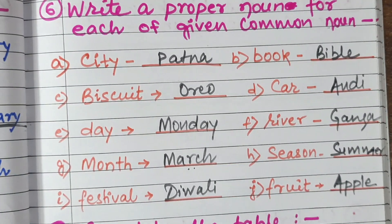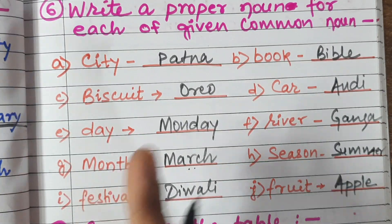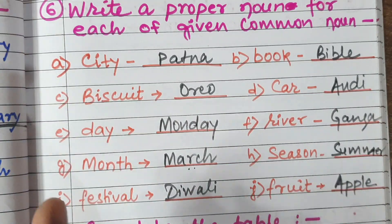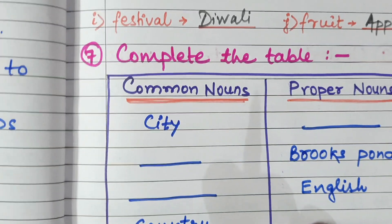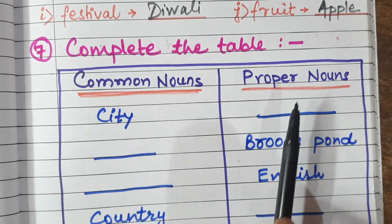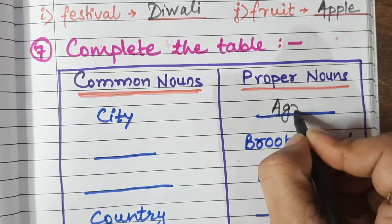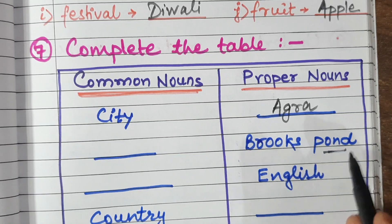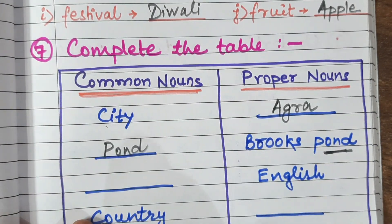This is common noun and proper noun revision. You can also reverse it: if you have written Bible, you have to write the common noun 'book' for it. You can also write it in tabular form — complete the table. Common noun 'city', proper noun written as Agra. If a proper noun like Brooks Pond is given, this is talking about a pond, so the common noun for it is 'pond'.